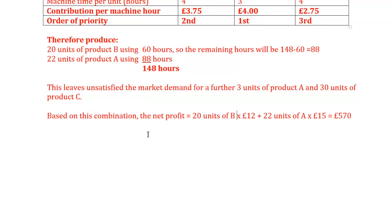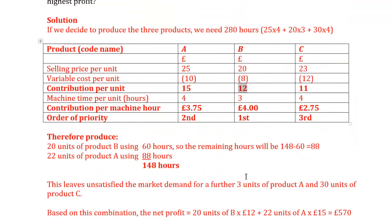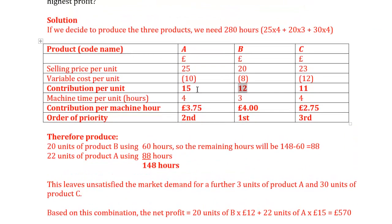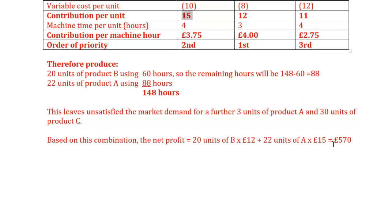Based on this combination, the net profit achievable is: 20 units of product B × £12 contribution margin per unit, plus 22 units of product A × £15 contribution margin = £570. If you try any other combination, you cannot reach £570, so this is the maximum achievable profit.